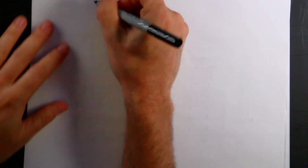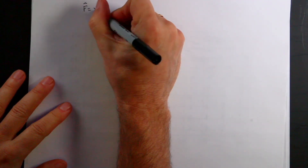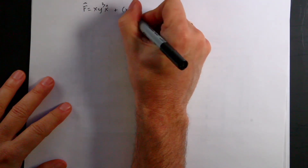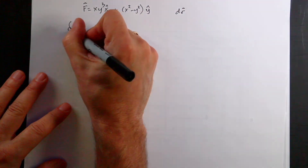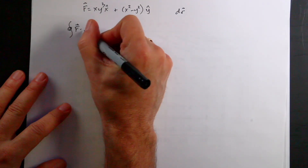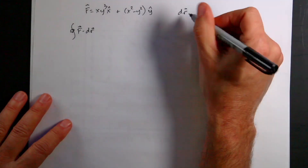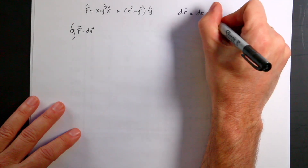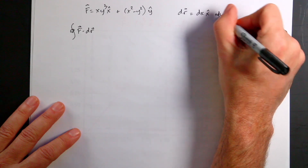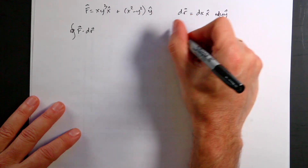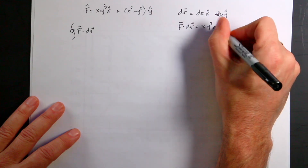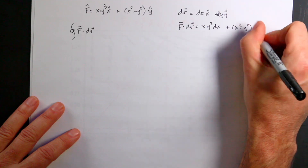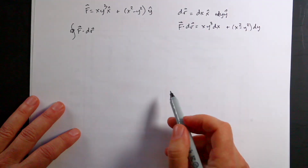Let me write my force: F = xy³ x-hat plus (x² − y²) y-hat. I need dr, because I'm doing the closed loop integral of F·dr. In Cartesian coordinates, dr = dx x-hat + dy y-hat. So F·dr = xy³ dx + (x² − y²) dy. That's a scalar function. The mistake I always make with path integrals is to try to incorporate dr as an actual vector saying it's going this way — but no, the direction comes from the limits of integration.